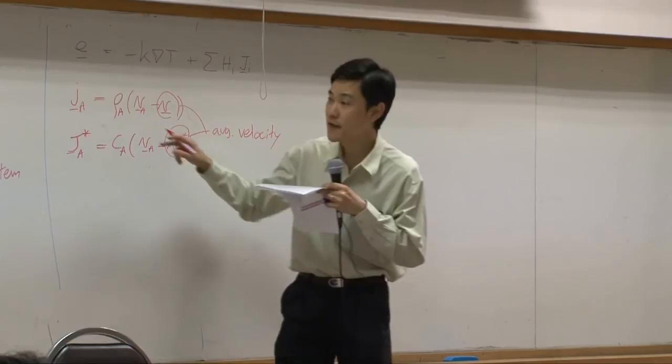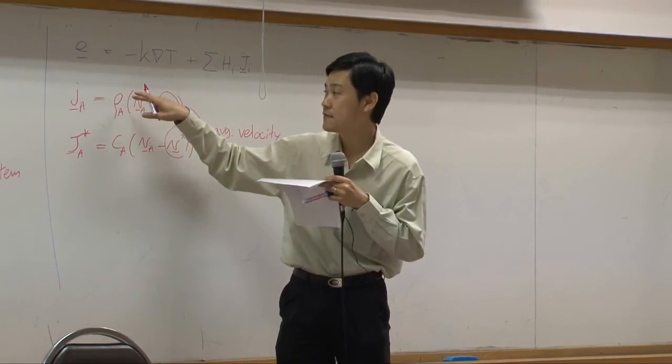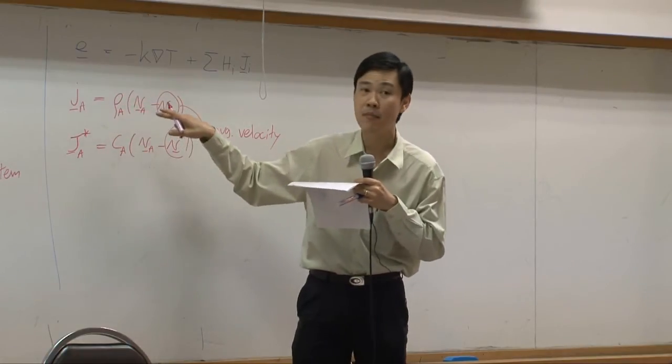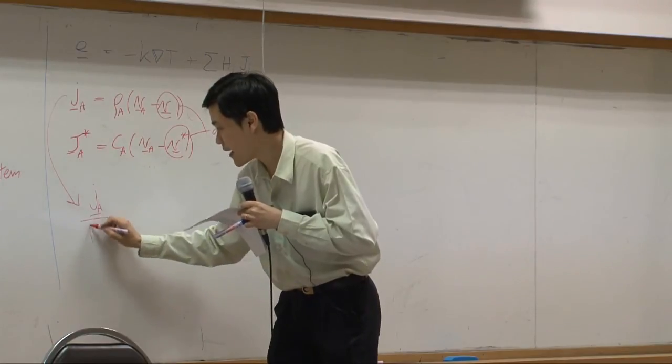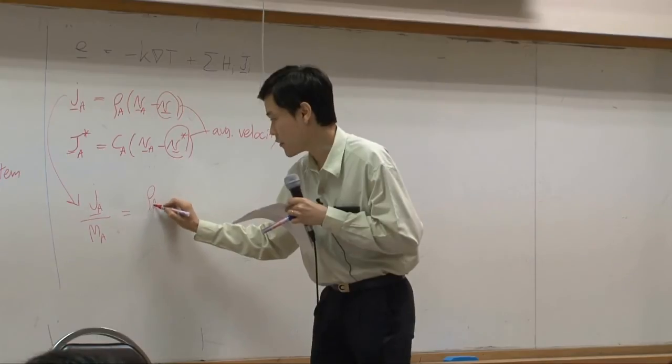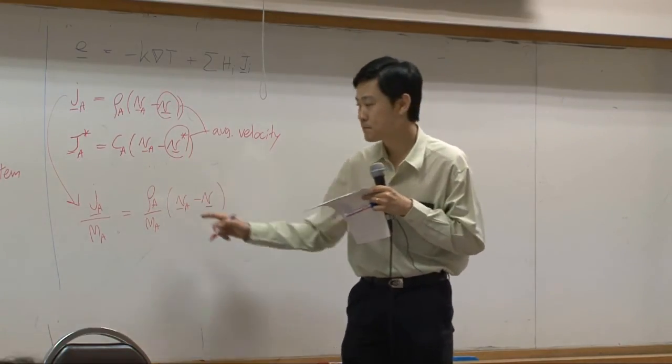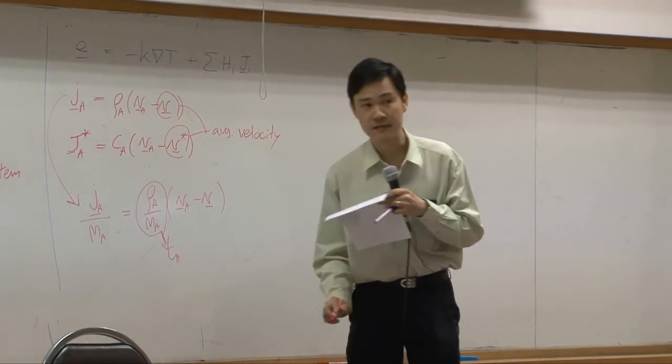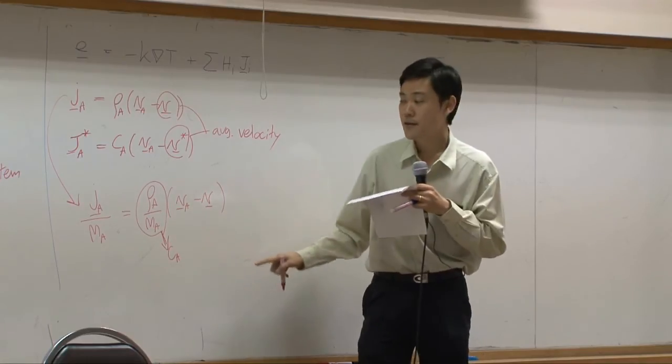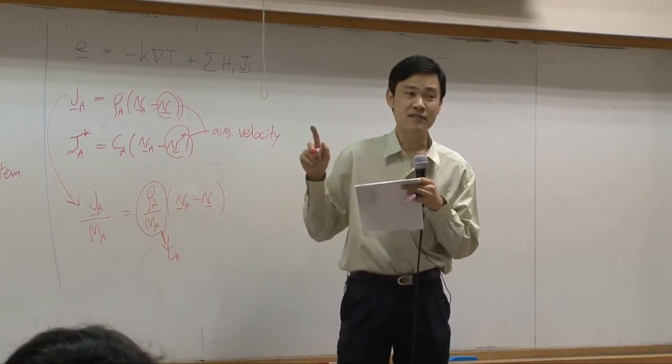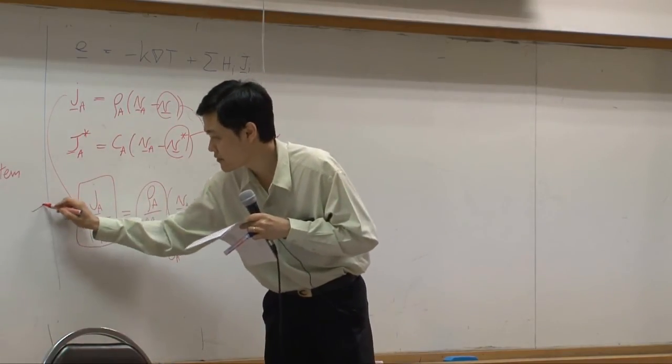Now if I take j_A, the small j, divided by molar mass, you have mass concentration rho_A divided by molar mass. So from here, j_A divided by molar mass of A should equal to rho_A divided by molar mass of A times V_A minus V. Rho_A by M_A is equal to C_A. Just convert from mass concentration to molar concentration. You get molar concentration right here. So physically it has no meaning. But mathematically we will call this term combined as capital J_A.